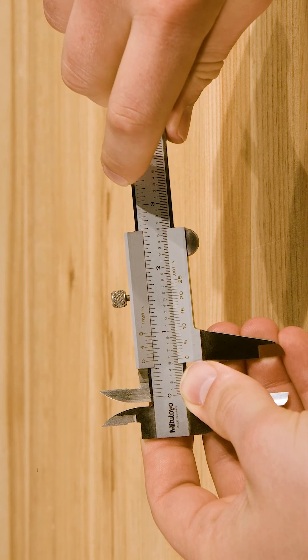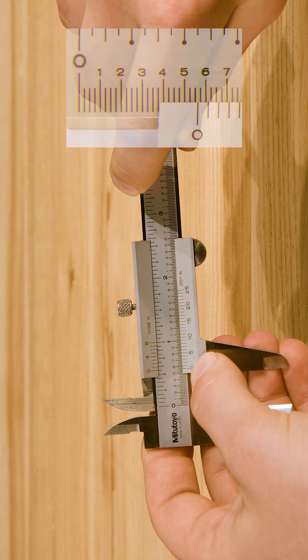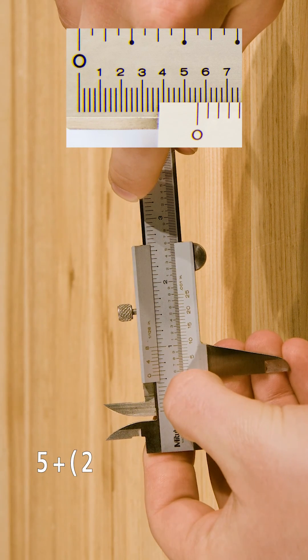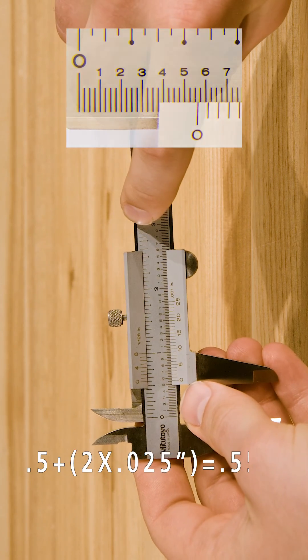Reading the caliper is a two-step process. First, look at the zero mark on the sliding scale and find the graduation that it last passed. In this case, it passed the five and then two more hash marks, so that's .55 inches.